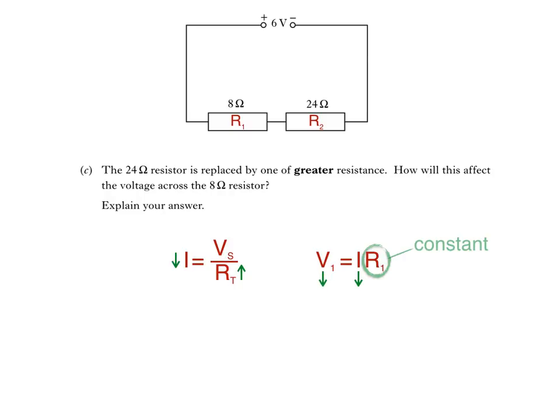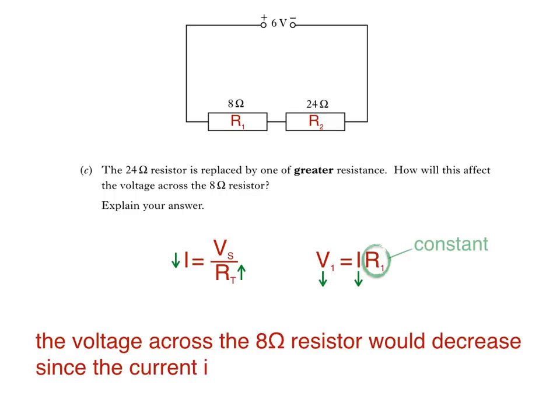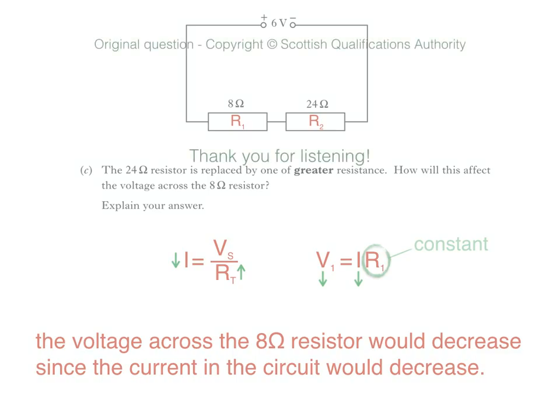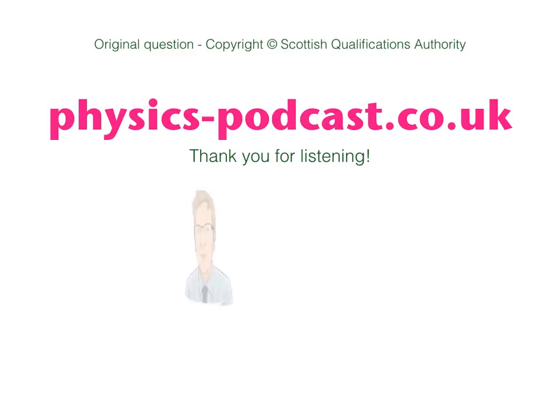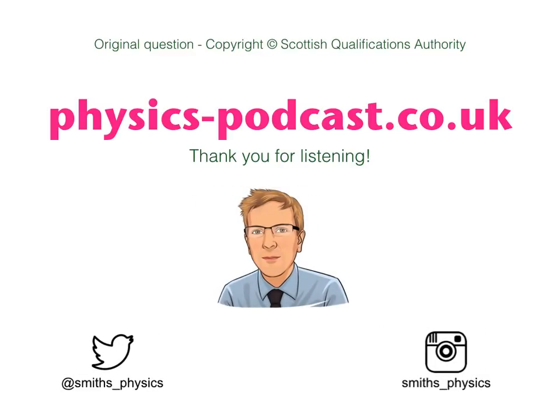And that's our answer. The voltage across the 8 ohm resistor would decrease since the current in the circuit would decrease. And so, sadly another video comes to an end. If you've enjoyed this one, and why wouldn't you, then please spread the word about the channel. The more subscribers, the merrier. For more information on upcoming videos, summary sheets and so on, visit physics-podcast.co.uk. Thank you for listening.